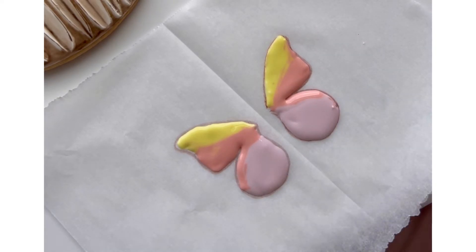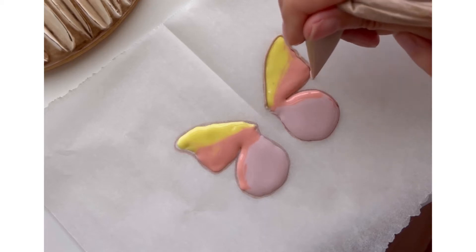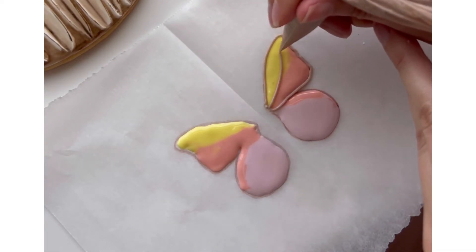I outlined with a stiffer icing, about 15 seconds, just to ensure that it didn't run into my colors and I had a nice crisp edge.